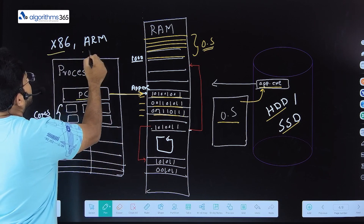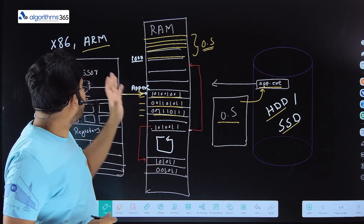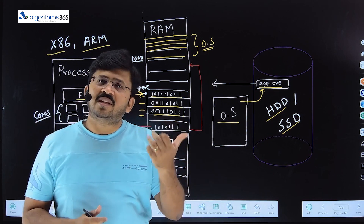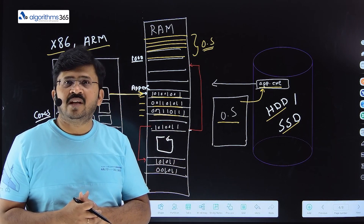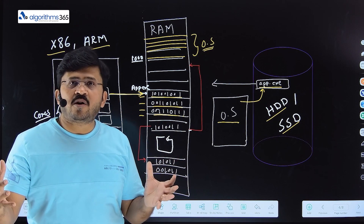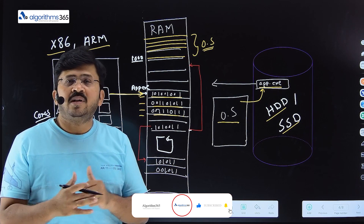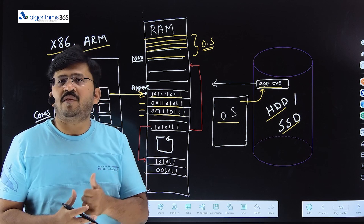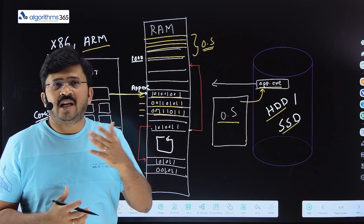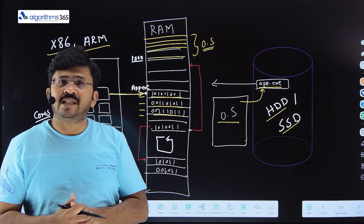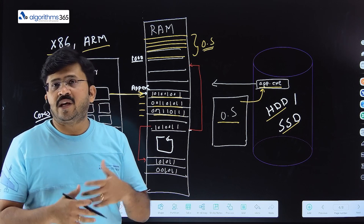There are two widely used CPU architectures: x86 and ARM. ARM has a simple, reduced instruction set, while x86 has a large, complex instruction set that takes more power and resources to run. Earlier, PCs and Macs used x86 architecture. ARM, with its reduced instruction set and lower power consumption, was used in most mobile phones and embedded systems.